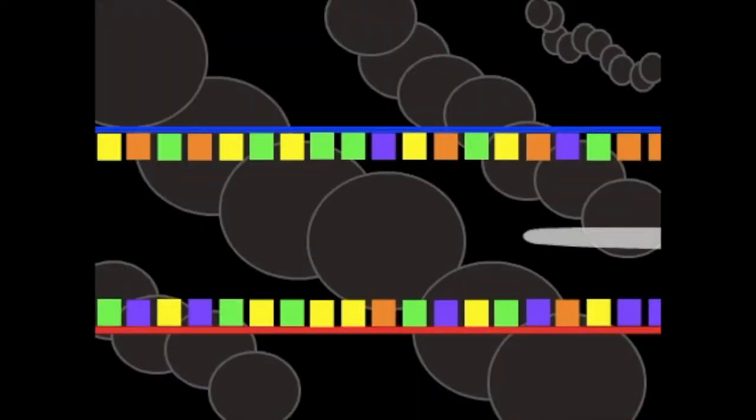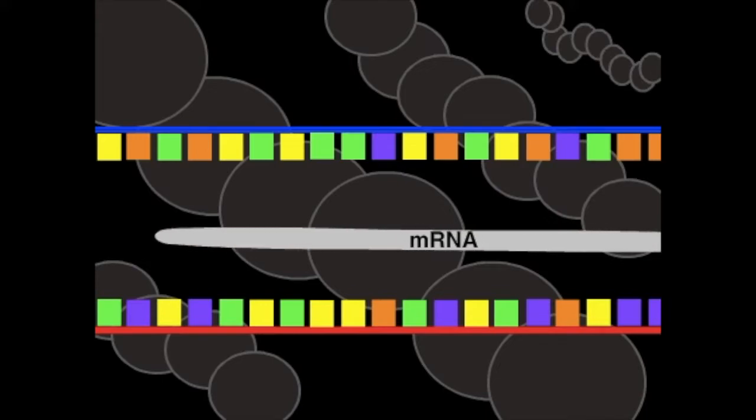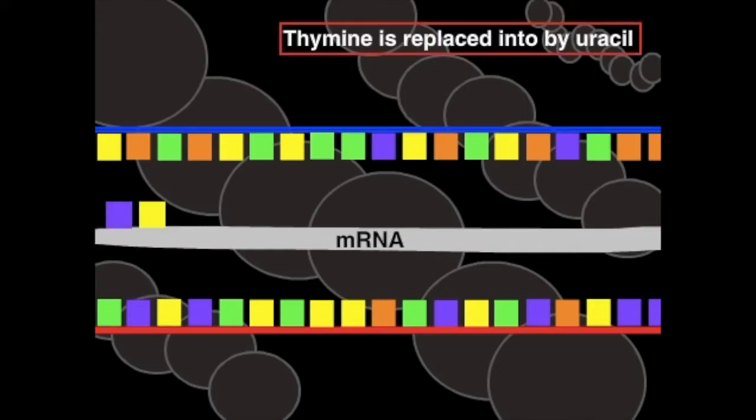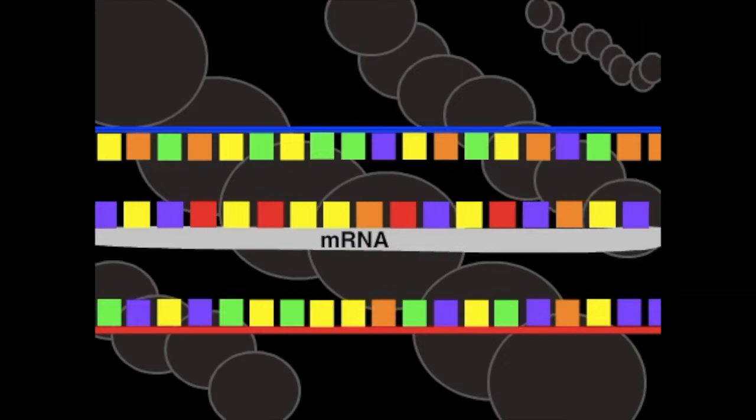The polymerase leaves behind or creates something called mRNA, or messenger RNA, which duplicates a segment of a gene. But thymine is replicated into a different base called uracil. It then leaves the DNA, which would rezip.